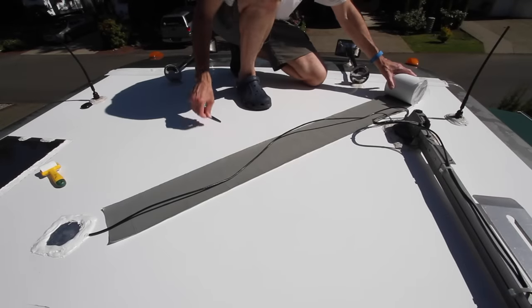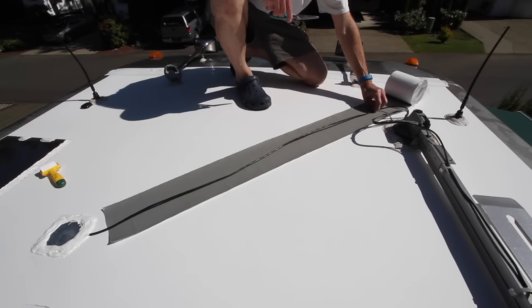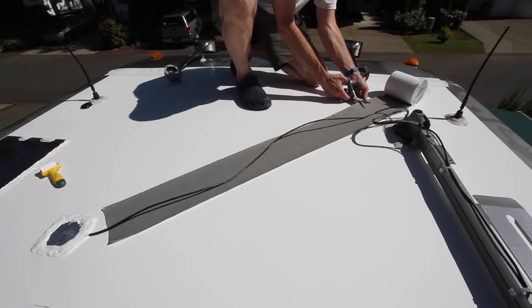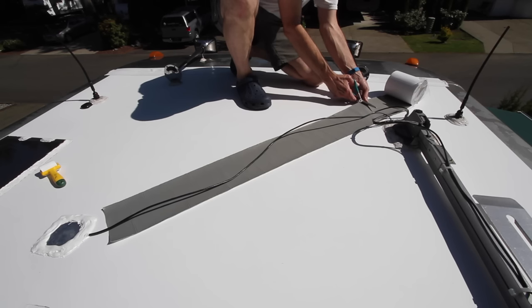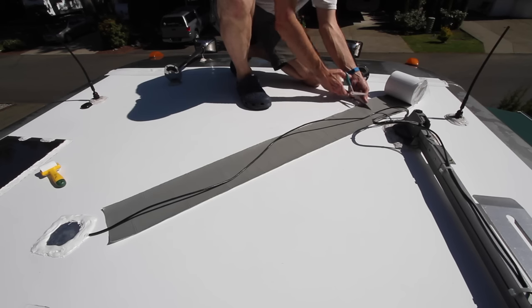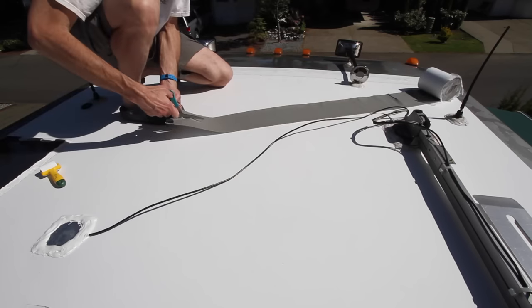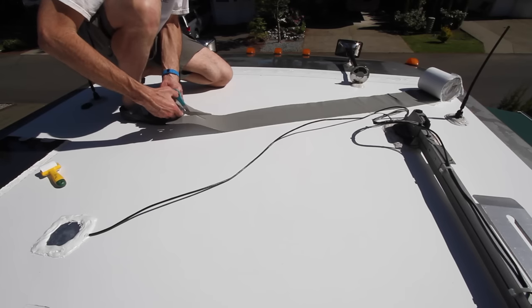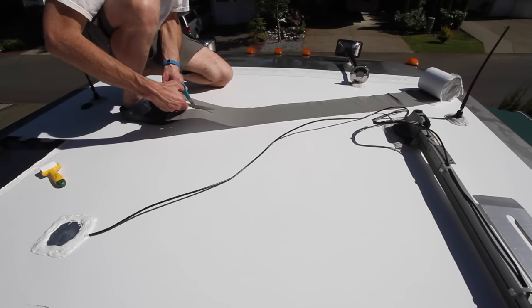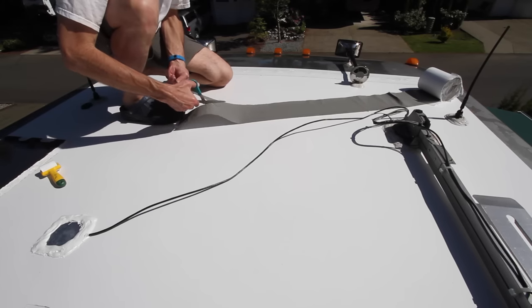We're going to protect the Ethernet cable from damage by securing it to the roof with EternaBond tape. EternaBond will never come off, so be aware of that before you start working with it. Our roll is six inches wide, but three inches is more than enough to do the job, so we're cutting it in half.